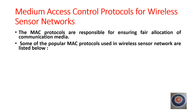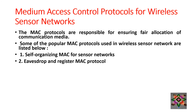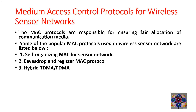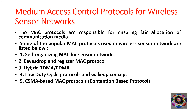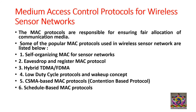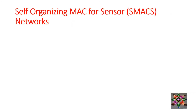Some of the popular MAC protocols used in wireless sensor networks are: first, self-organizing MAC for sensor networks (SMACS); second, FSTRAP and register MAC protocol; third, hybrid TDMA/FDMA; fourth, low duty cycle protocols and the wake-up concept; fifth, CSMA-based MAC protocols, which are contention-based; sixth, schedule-based MAC protocols; and seventh, IEEE 802.15.4 ZigBee. Let us now discuss about the self-organizing MAC for sensor networks, that is SMACS.